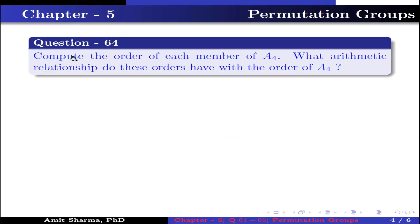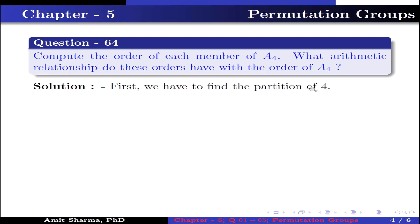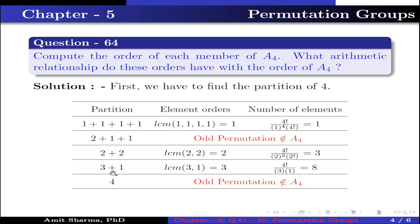Question number 64: compute the order of each member of A4. What arithmetic relationship do these orders have with the order of A4? First, we have to find the partition of 4. The following table shows the partition of 4 — element, order, and number of elements. The first partition is 1+1+1+1 and LCM is 1, giving elements of order 1. The number of elements of order 1 is 4! divided by 1⁴, because the 1-cycle is presented 4 times into 4!, which equals 1. So the number of elements of order 1 is 1. The next partition is 2+1+1; it is an odd permutation that does not belong to A4, because An contains even permutations only.